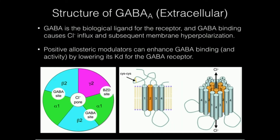Here's a little more detail on the structure of the GABA receptor. You can see here the individual subunits, and in the very center that's the chloride channel. Generally, chloride is going to flux from the extracellular side to the intracellular side when GABA binds. Not only are there two main GABA binding sites, but there's also a benzodiazepine binding site, and there are other sites that can allosterically modulate the activity of the GABA receptor.